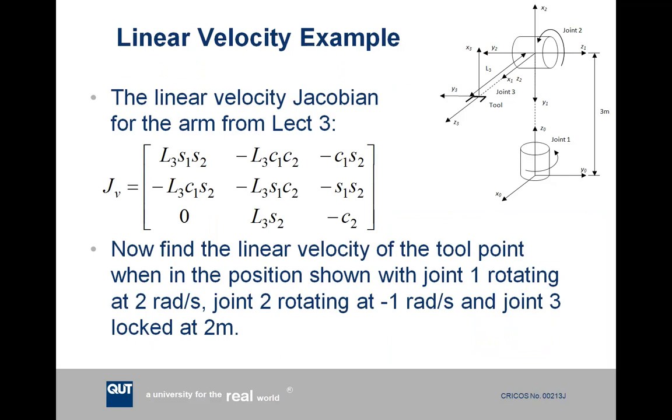All right, so now let's plug some numbers in. Let's deal with the position and configuration of the robot arm as shown in the diagram. Let's have joint 1 rotating at 2 rads per second. We're using the Jacobian, not the inverse Jacobian. Joint 1 rotating at 2 rads per second, joint 2 rotating at negative 1 rads per second, and joint 3 locked at 2 meters. So joint 3 is going to have no velocity, velocity is going to be 0.